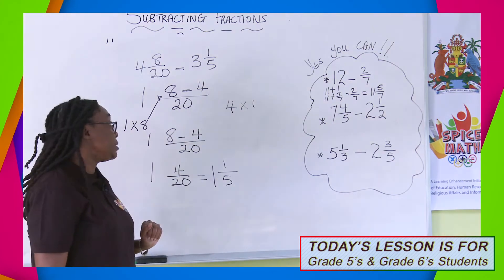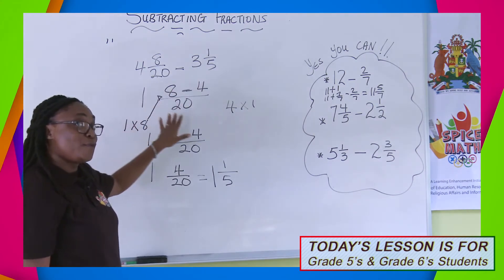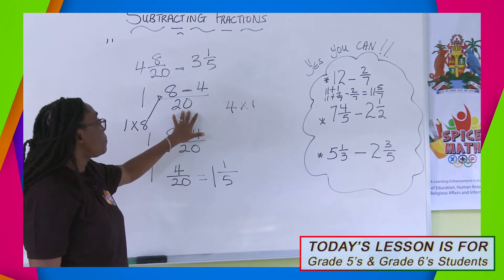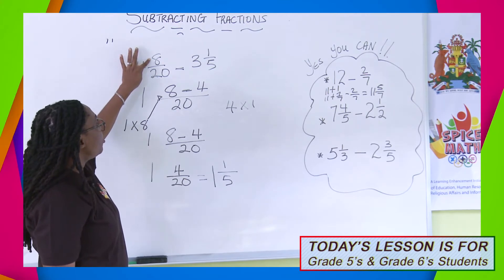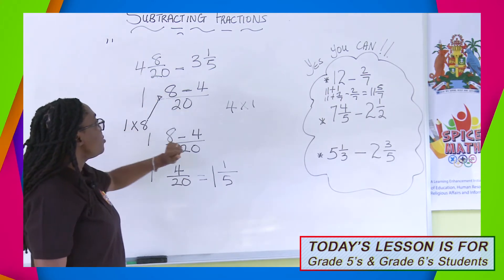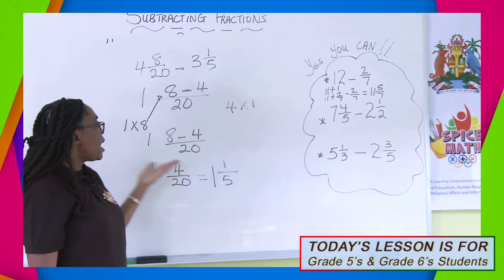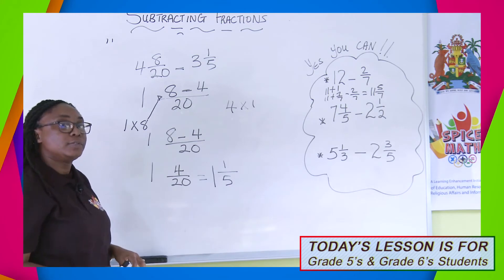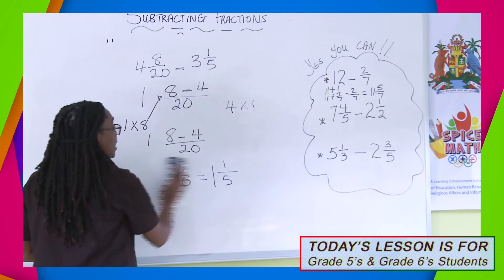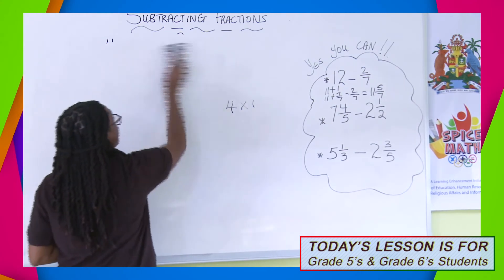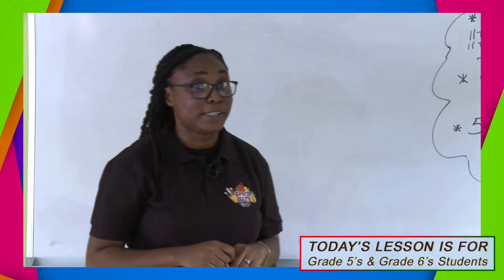Let's go through the steps again. We had 4 minus 3 — worked with whole numbers, got 1. Found the LCM. 20 into 20 gave us 1; multiplied by numerator 8 gave 8. Then 5 into 20 gave 4; multiplied by numerator 1 gave 4. Continued our subtraction operation. Now, there are times when the question looks different — remember earlier we tried to subtract 8 from 7? That wouldn't work with simply proper fractions.